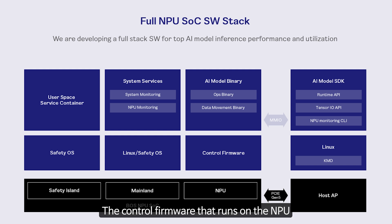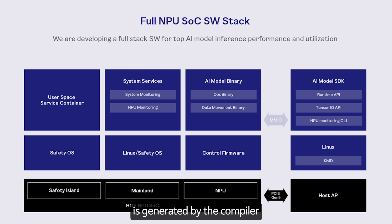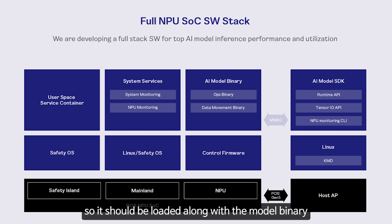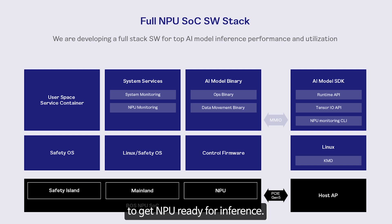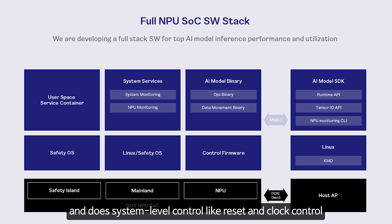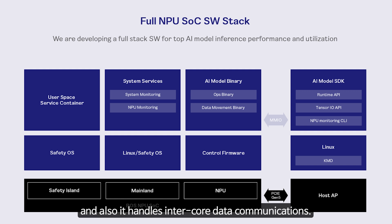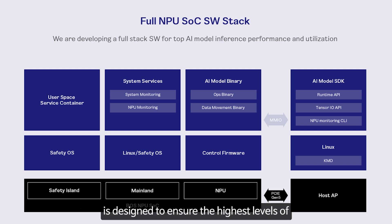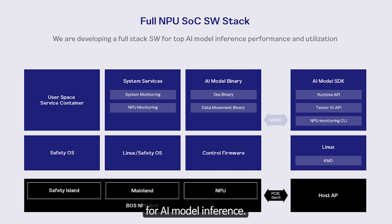The control firmware that runs on the MPU is generated by the compiler and is specific to the model to be run. It should be loaded along with the model binary to get the MPU ready for inference. The control firmware initializes the MPU and handles system-level control, like reset and clock control, as well as inter-core data communications. This comprehensive software stack is designed to ensure the highest level of system performance, safety, and efficiency for AI model inference.